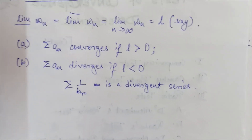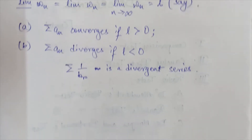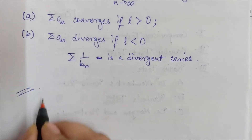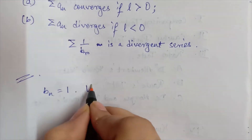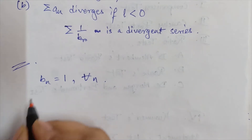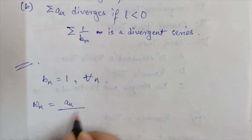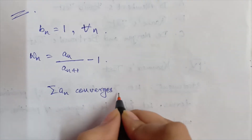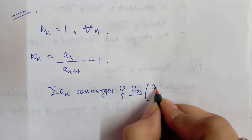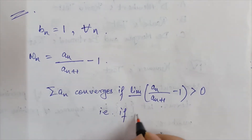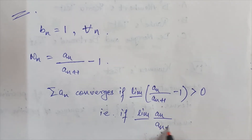From here we can say that D'Alembert's ratio test is a particular case of Kummer's test. For that, we take b_n = 1 for all n; then clearly the series 1/b_n is a divergent series. Then W_n can be written as (a_n / a_{n+1}) - 1. Hence by Kummer's test, the series a_n converges if the lower limit of (a_n / a_{n+1}) - 1 is greater than 0, that is if the lower limit of a_n / a_{n+1} is greater than 1.